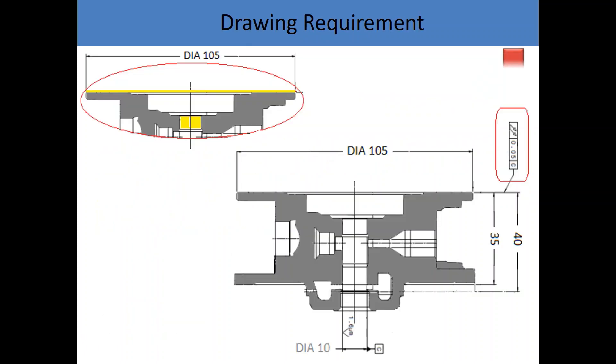The drawing requirement shown is total run-out of the top face, with reference to datum cylinder. The tolerance feature plane is top surface of the component. The area is bounded by the diameter of 105 mm. The datum feature is hole as cylinder of diameter 10 mm.